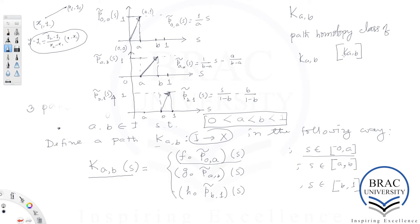We do this by choosing two different points c and d between 0 and 1, with c < d, and showing that K_{a,b} is path homotopic to K_{c,d}. The formula for K_{c,d} is found simply by replacing a with c and b with d respectively.